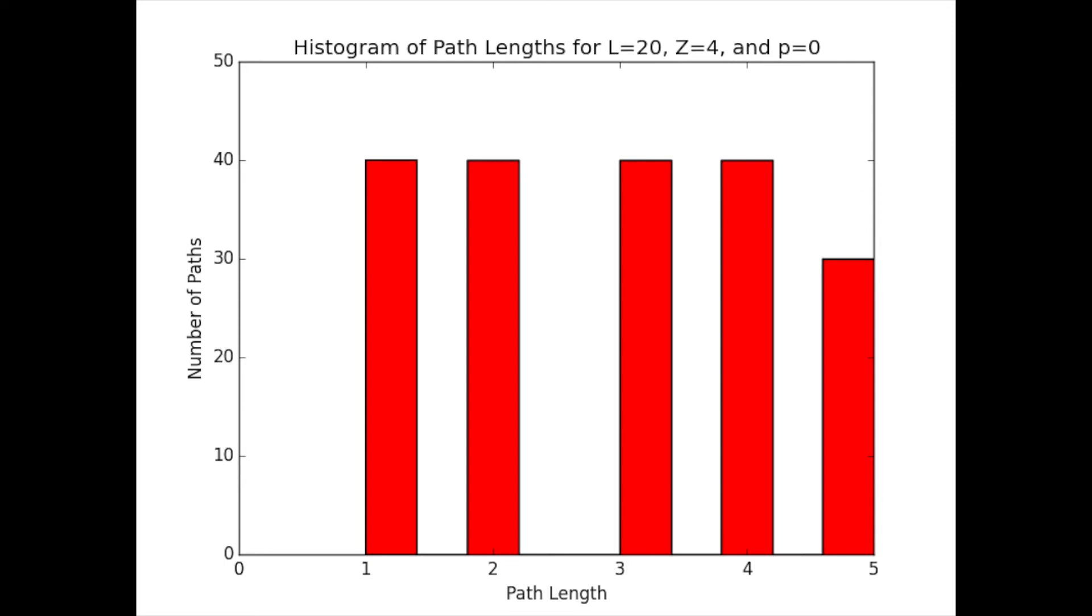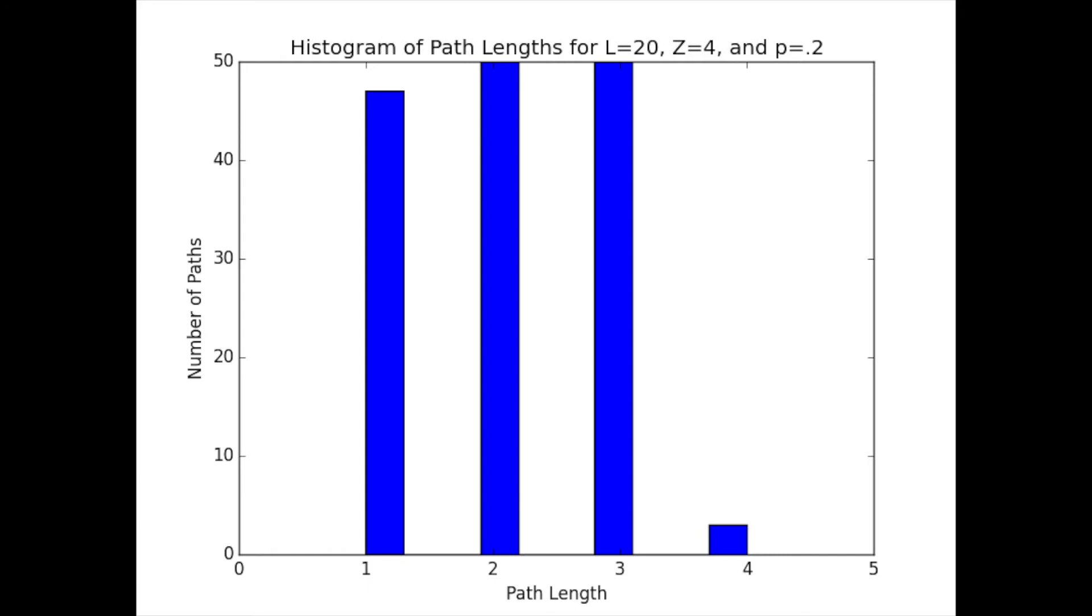For example, in the graph with P equals 0, the average path length is 2. Here is a histogram of the path lengths with probability 0. When P equals 0.2, shortcuts are added, and although the average path length is still close to 2, it is slightly lower. This histogram shows the average path length for P equals 0.2.